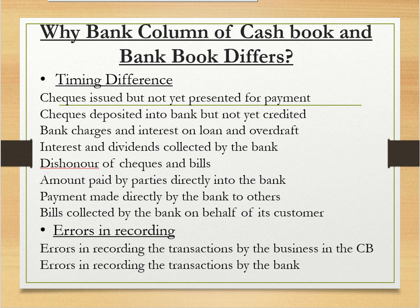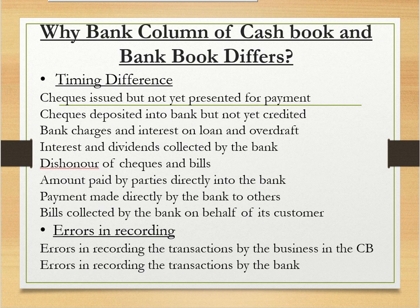Dishonor of checks and bills: if a check is issued or deposited, there is a possibility it may be dishonored. When we enter the check and it is later dishonored, the effect is reversed, causing a difference. Also, amounts paid directly by parties into the bank appear in the passbook but we may not know about them in our cash book. Payments made directly by the bank to others similarly cause a difference. Bills collected by the bank on behalf of its customers will reflect in the passbook but not yet in the cash book. These are the reasons: timing difference and error in recording.